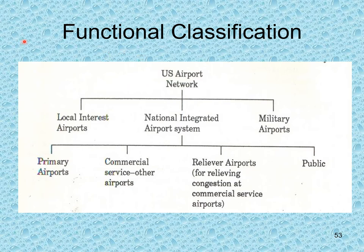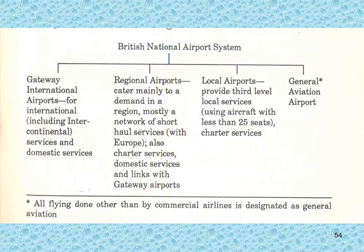Under functional classification, the US airport network includes local interest airports, the national integrated airport system (comprising primary airports/commercial service airports, reliever airports for relieving congestion, and public airports), and military airports. The British national airport system includes gateway international airports, regional airports, local airports, and general aviation airports.